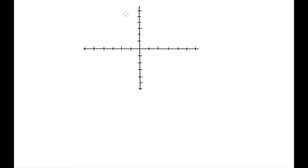In this lesson we're going to be talking about how you can go about calculating the distance between two points that are on a Cartesian plane. So let's say we had one point here and this was point A, and then we had another point over here and this was point B.